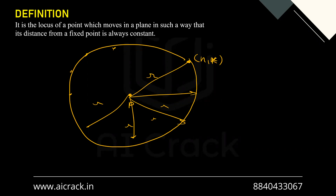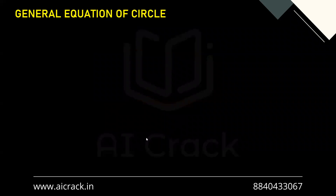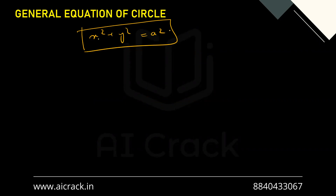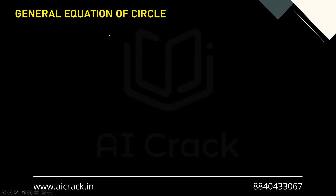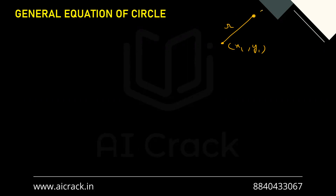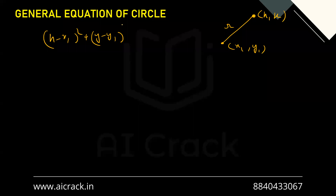Now let's talk about the general equation of a circle. You may have seen the circle in the format x² + y² = a², but that is a very specific form. To derive the general equation, let's say we have center (x₁, y₁) and radius r, with variable point (h, k). Applying the locus condition using the distance formula: (h − x₁)² + (k − y₁)² = r².